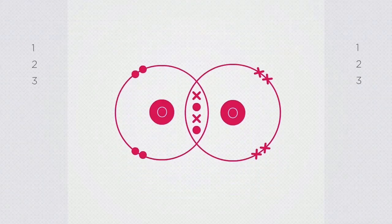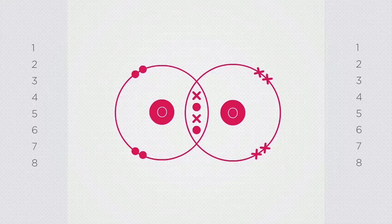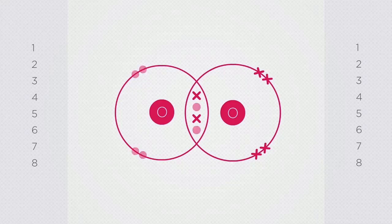If you count the number of electrons in each shell, you should notice that each shell has eight electrons shared over two shells, shown by the dots for one oxygen atom and crosses for the other, which is the ideal.